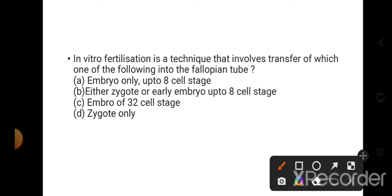In vitro fertilization is a technique to transfer which of the following into the fallopian tube? Into the fallopian tube, up to the eight-cell stage, zygote can be transferred, early embryo - both can be done. So the right option is option B.